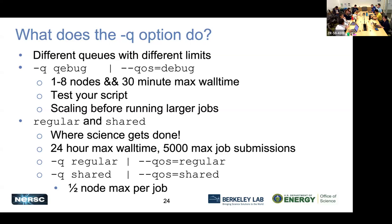The -Q option specifies the QoS. The debug QoS gives you one to eight nodes and a 30-minute max wall time, which is good for benchmarking and testing scalability. You also have regular and shared queues, where most large-scale science computations are done. The regular QoS allows a 24-hour max wall time and 5,000 max job submissions.